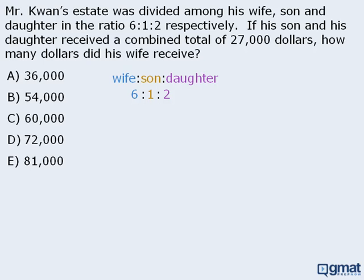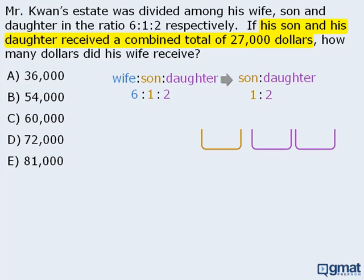For the moment, if we ignore the wife, we see that the ratio of the money the son received to the money the daughter received is 1 to 2. The question tells us that the son and daughter received a combined total of $27,000, and from the ratio, for every $3 the children receive altogether, the son gets $1 and the daughter gets $2. Taking $27,000 and dividing it into three equal parts, the son received $9,000 and the daughter received $18,000.